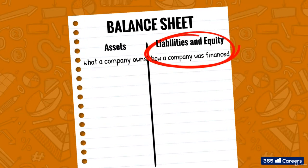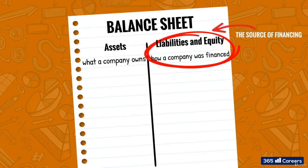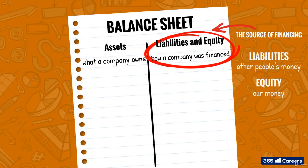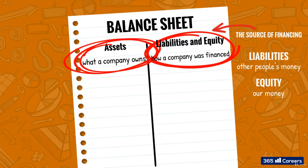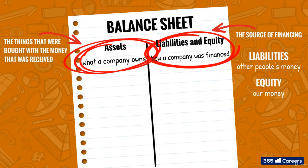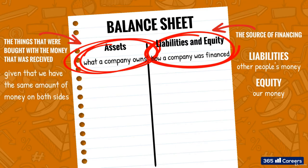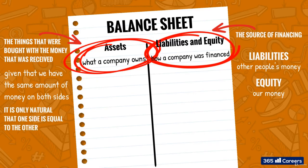This is very logical. On the right side, we have liabilities and equity, which are the firm's sources of financing. Liabilities are other people's money, and equity is our money. On the left side, we have the firm's assets — the things that it has bought with the money that it received. Given that we are thinking about the same amount of money on both sides, it is only natural that one side is equal to the other.